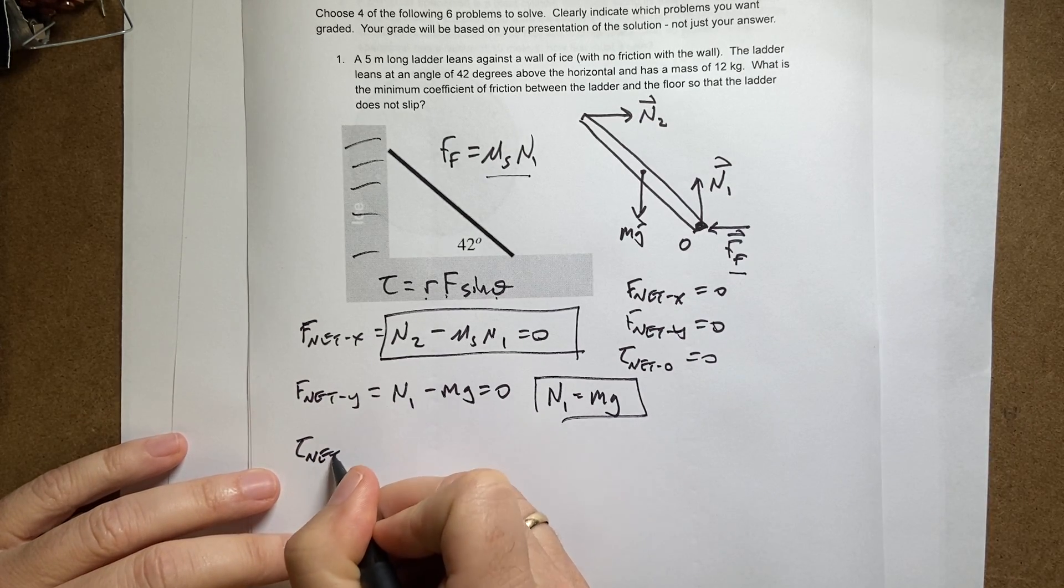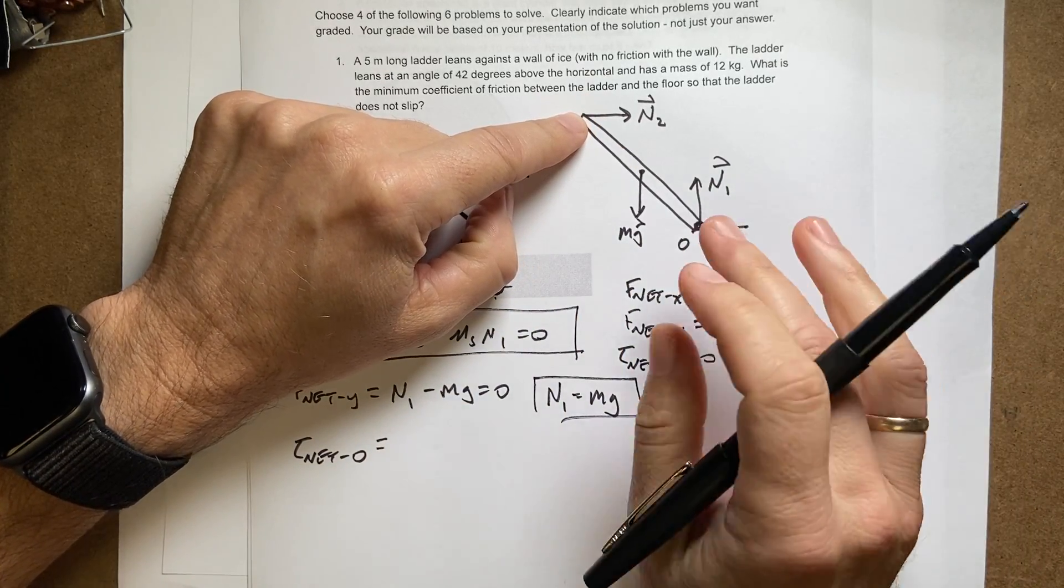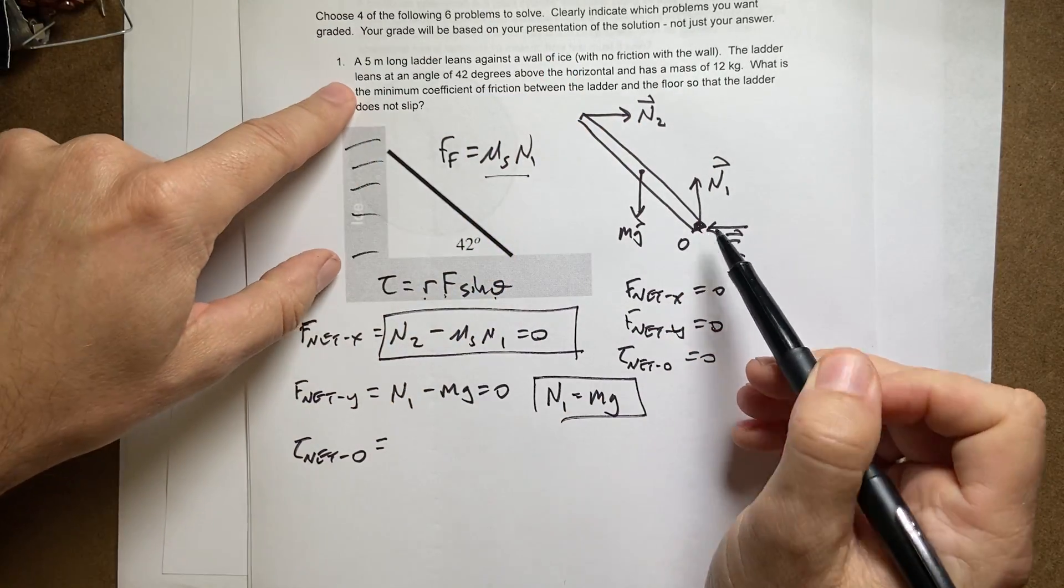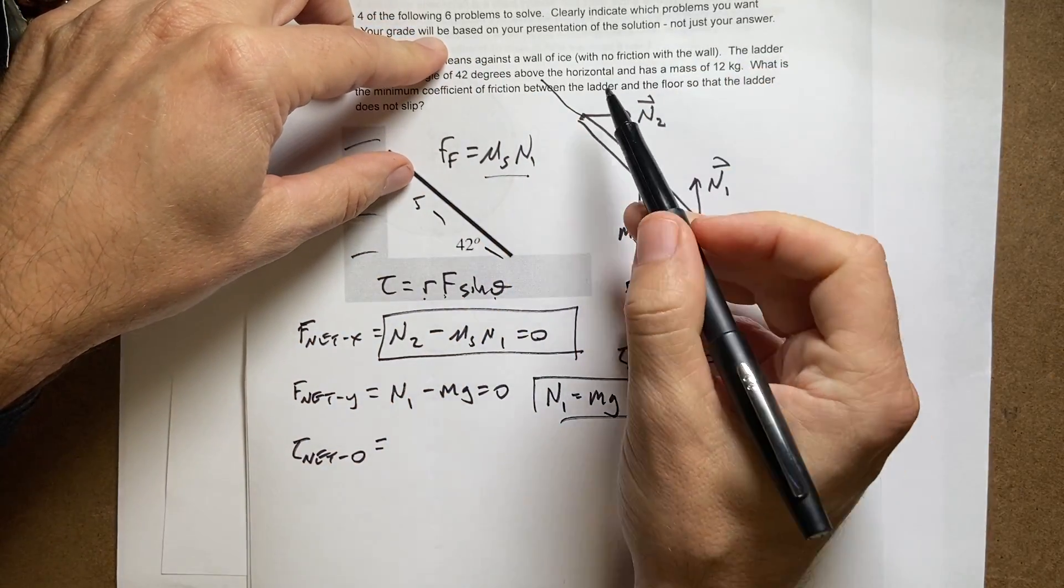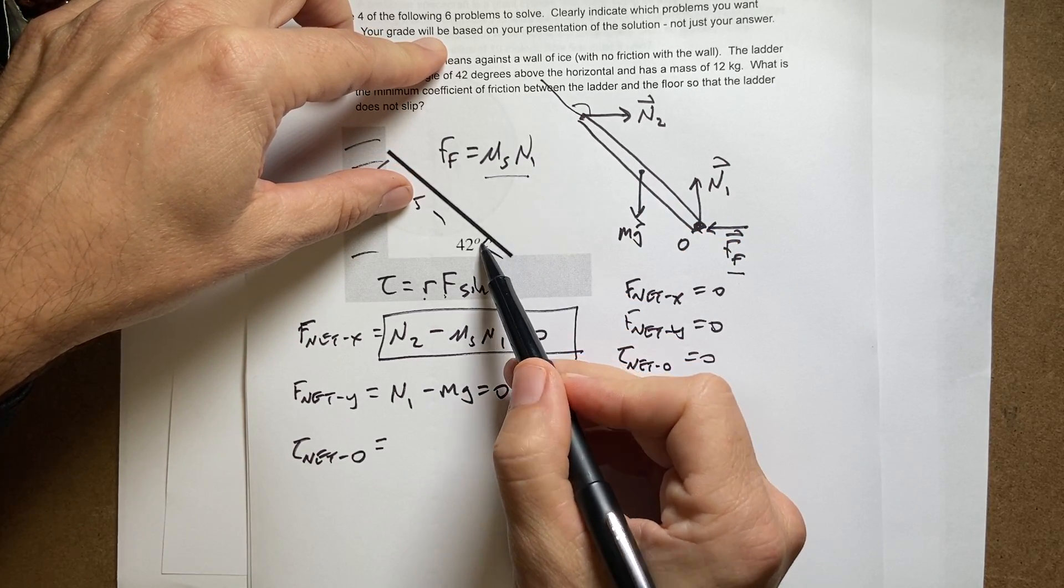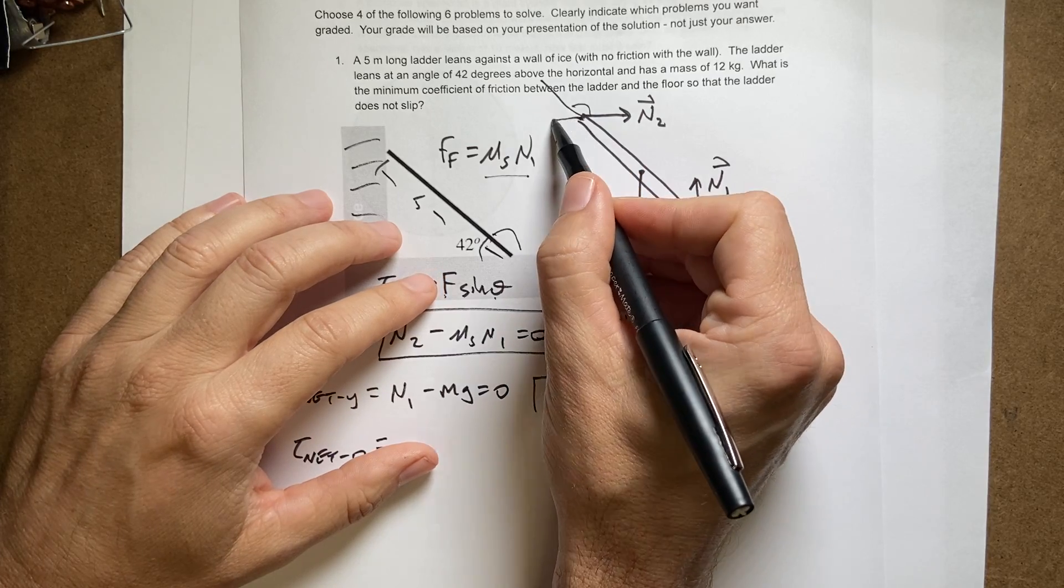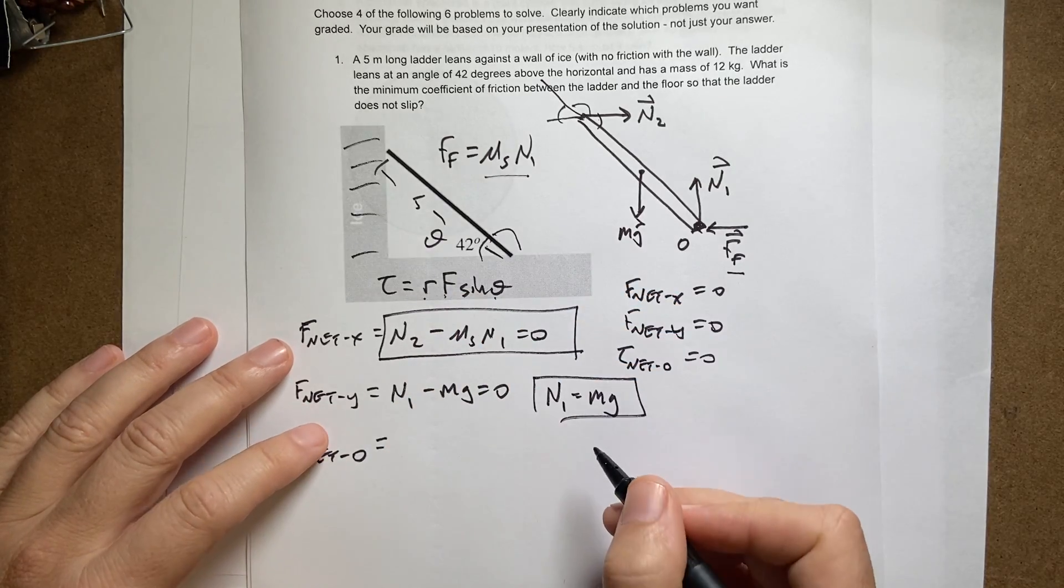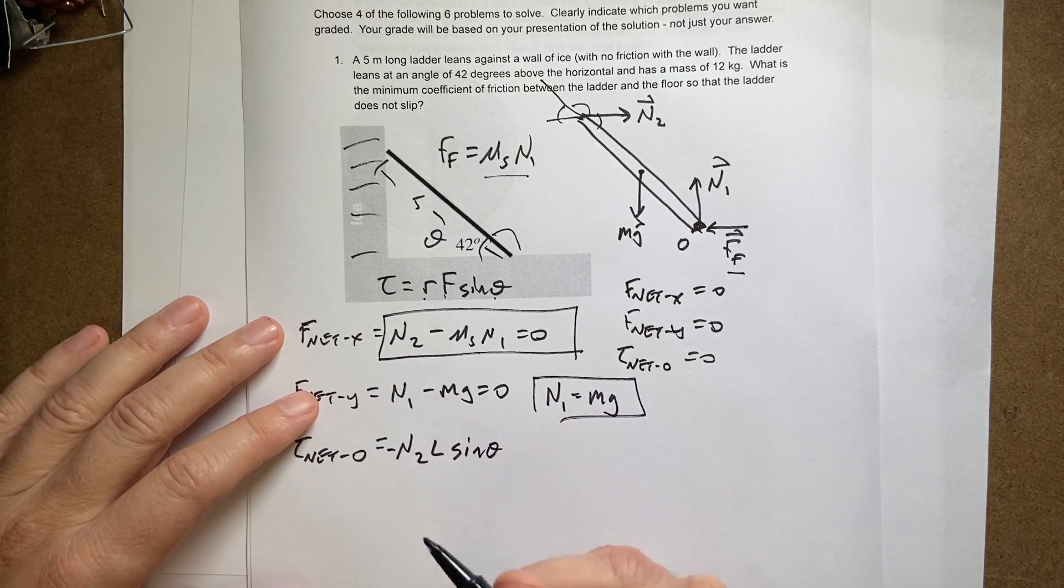So torque net O equals this torque due to N2. Now, is that going to be a positive or negative torque? If it would make it go clockwise, that's a negative torque. So this is going to be negative torque. And I could use, this is five meters long. So L is five. So this is going to be R. That angle right there is going to be, if that's 42, that would be 180 minus 42. But I actually can use this angle. I'll get the same thing. So let's just call this theta. So this is going to be equal to N2 times L times sine of theta, and it's going to be negative. That's the torque due to that one.